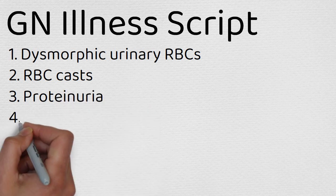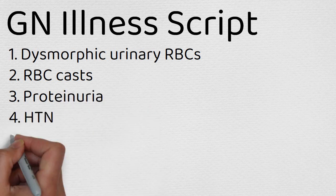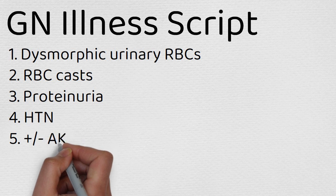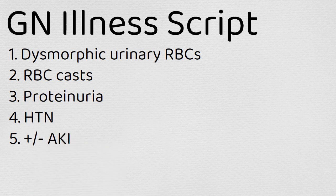Three is proteinuria. Four is hypertension. And lastly, you may or may not have AKI.